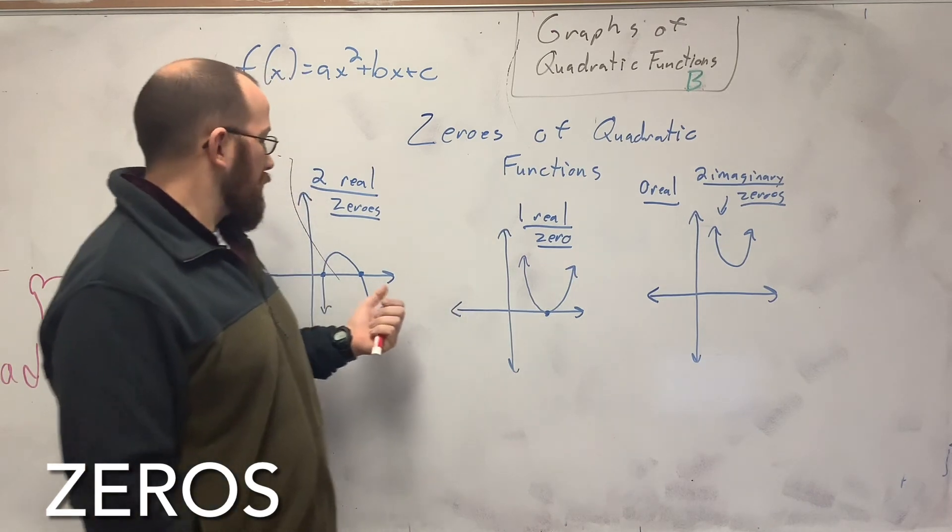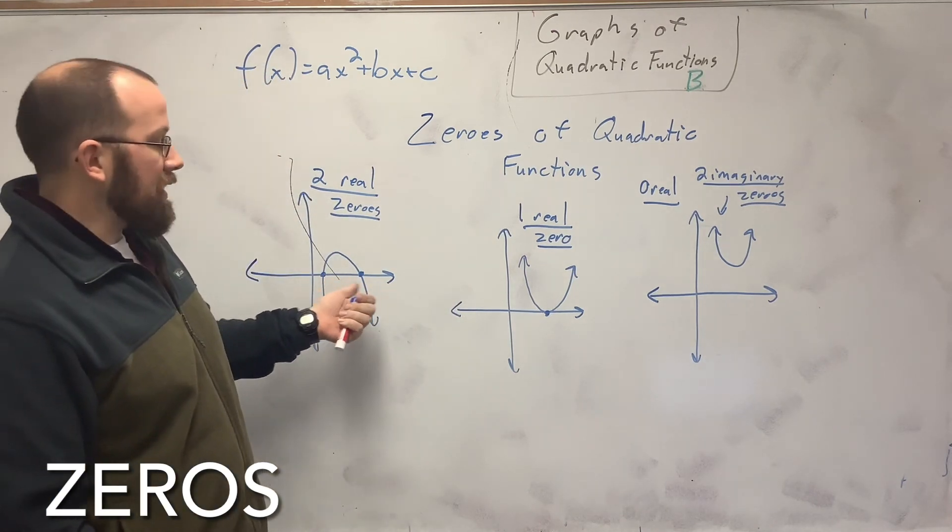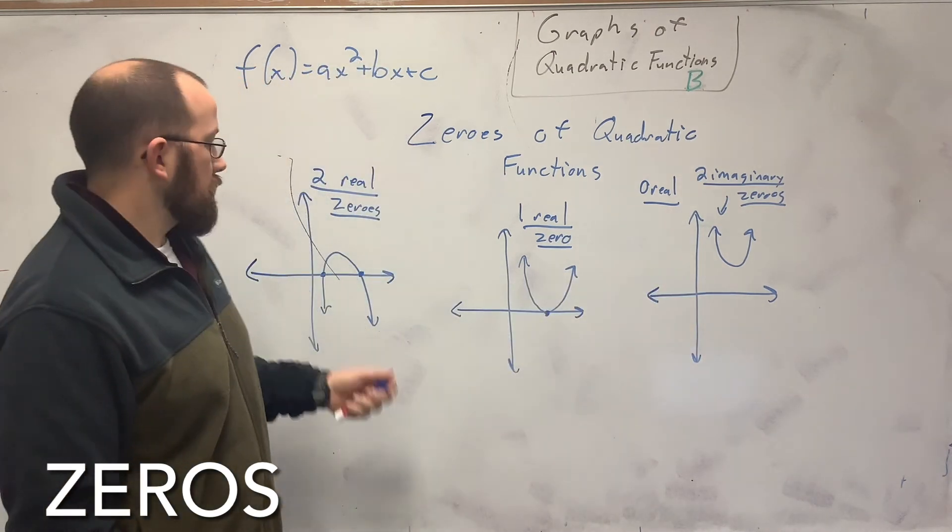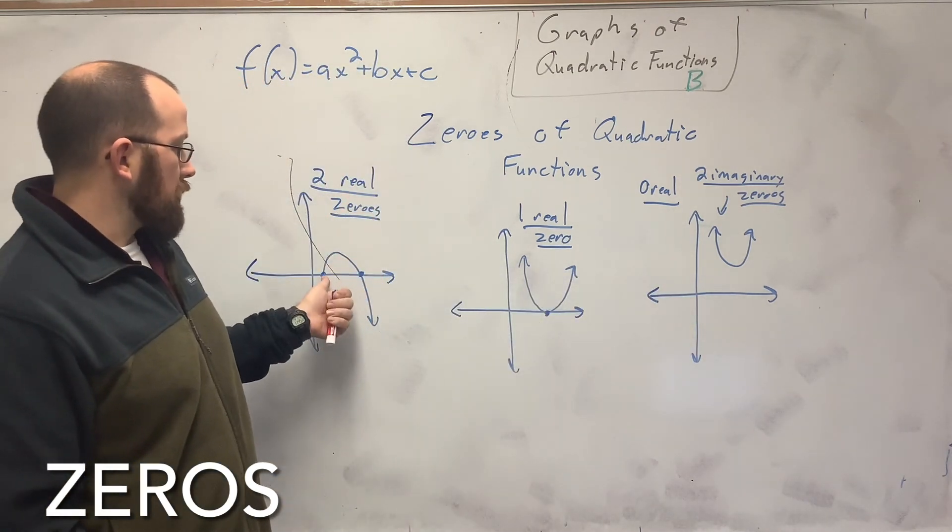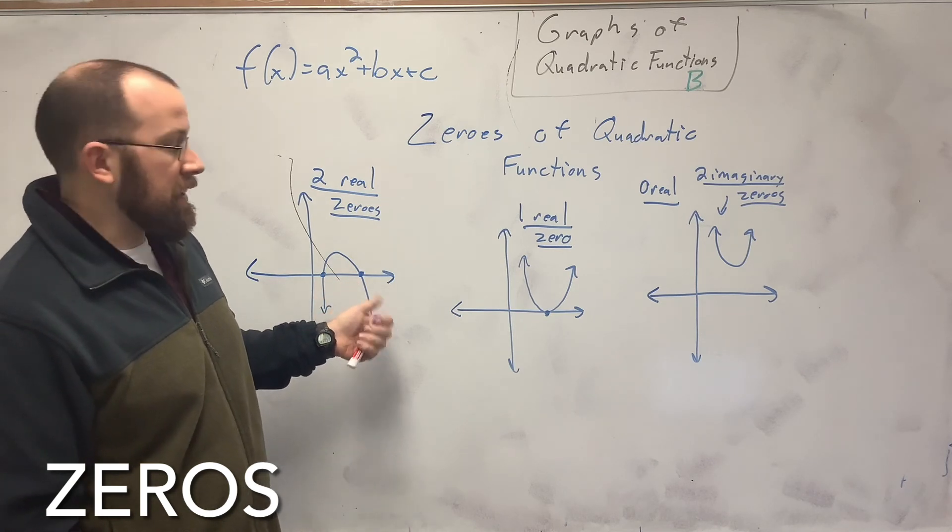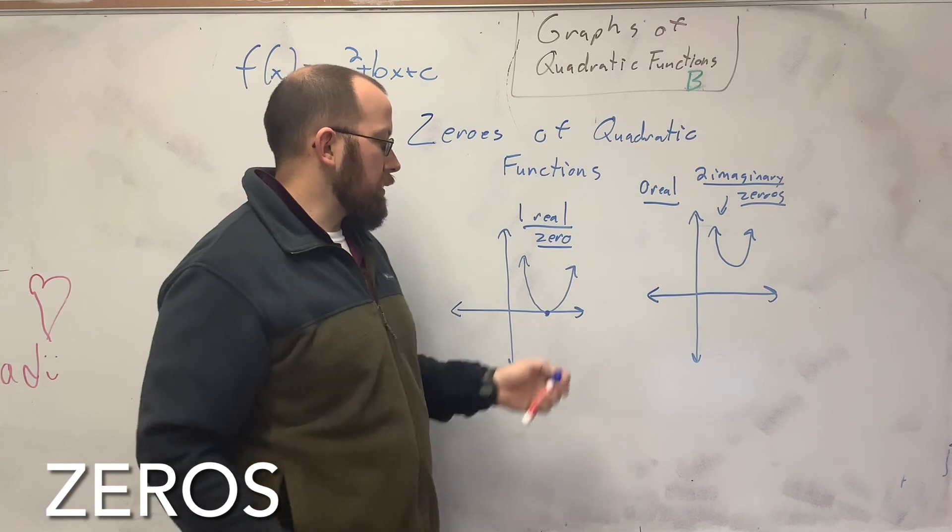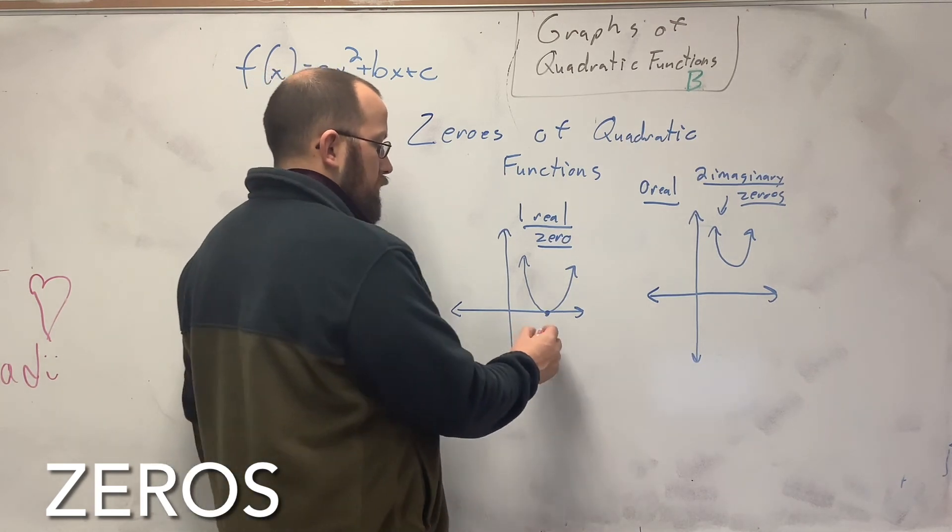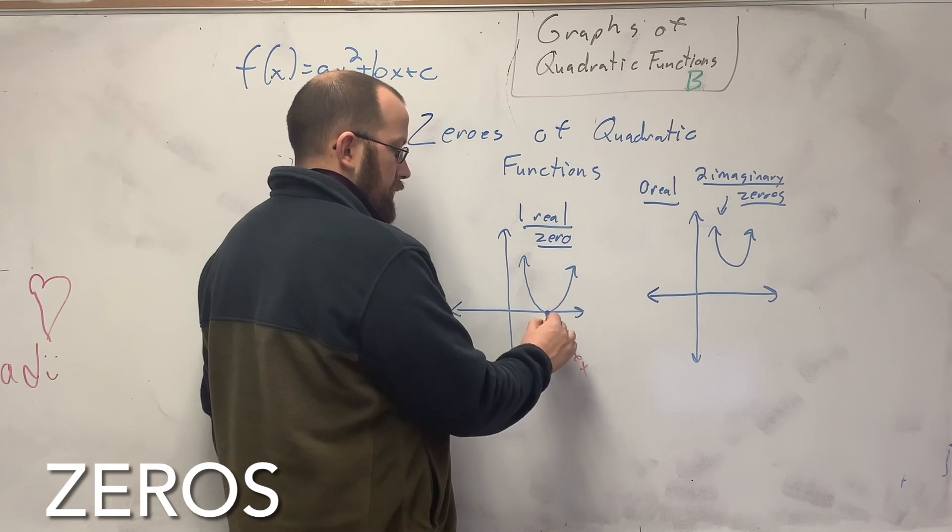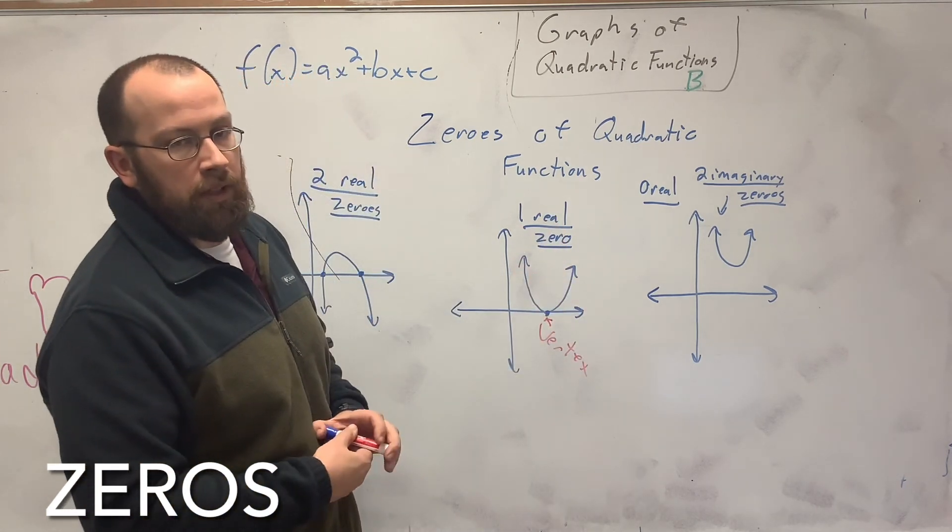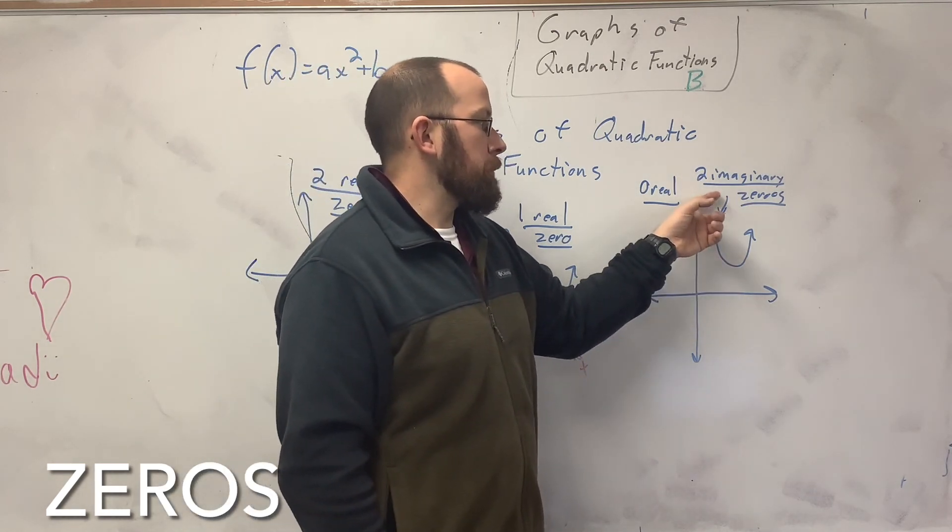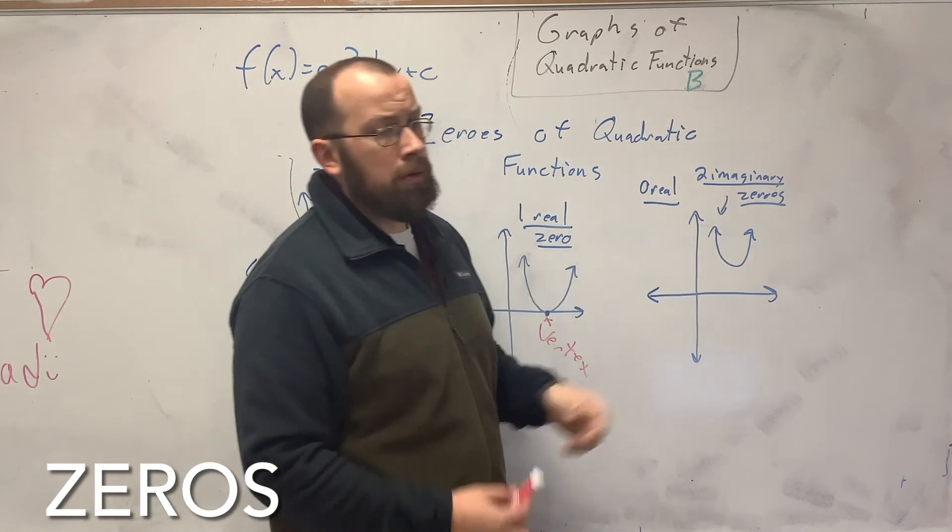So what the zeros are basically, they are just the x-intercepts. They're also called the roots. This one has two real zeros, because it crosses the x-axis two places. One real zero is when only the vertex touches the x. That's when you only have one answer, because it only hits at one spot, the vertex. And if it doesn't hit at all, you have two imaginary zeros, or zero real ones.